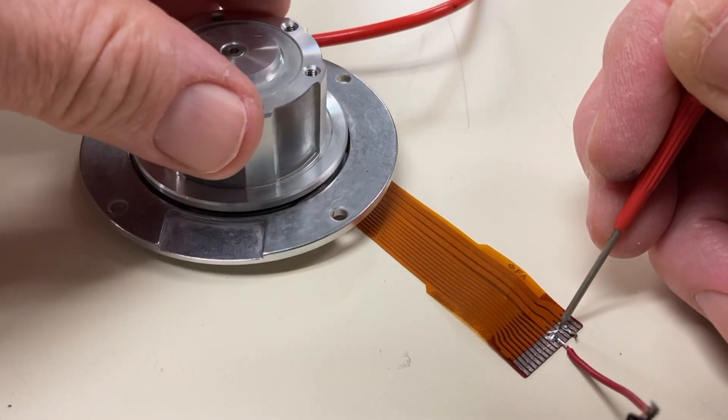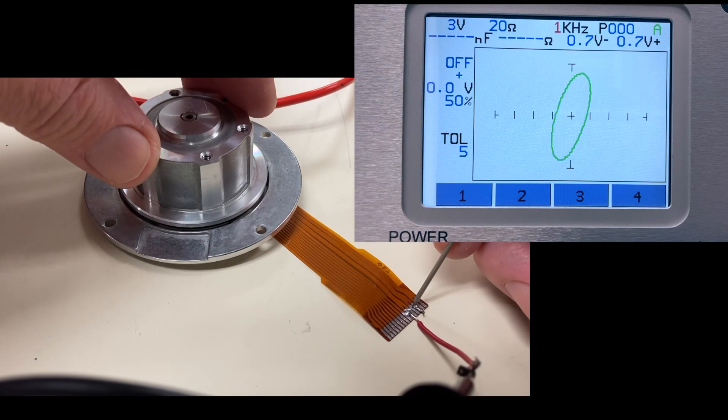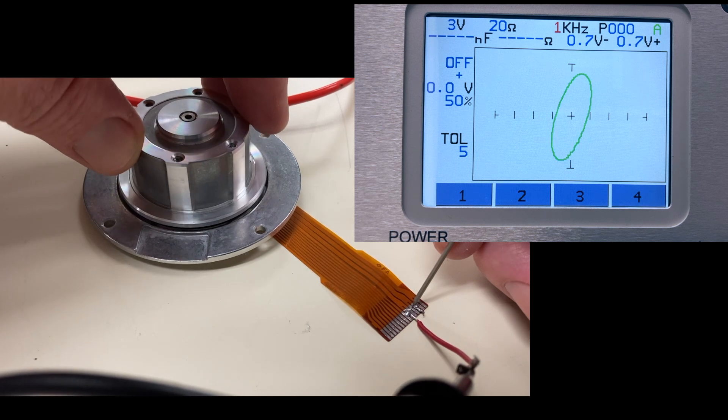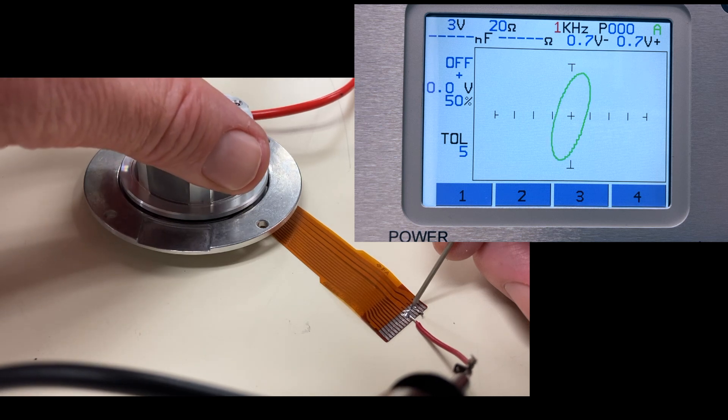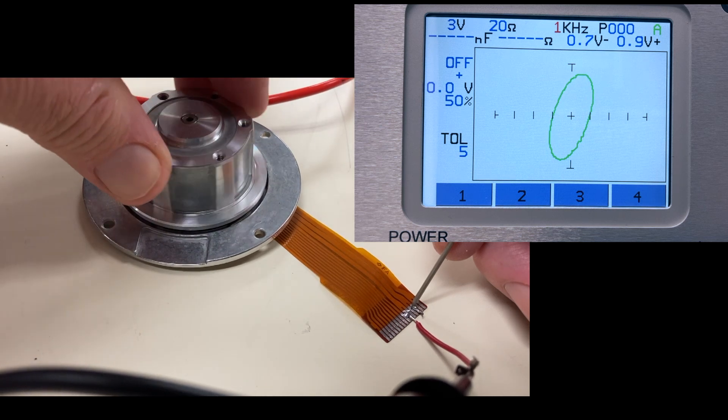To illustrate this point, here is a live signature of a single winding on a stepper motor. Physically turning the motor shaft changes the electrical nature of the inductive winding and this is reflected in the tracker signature.